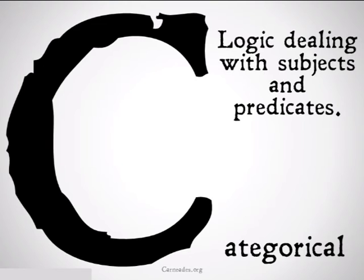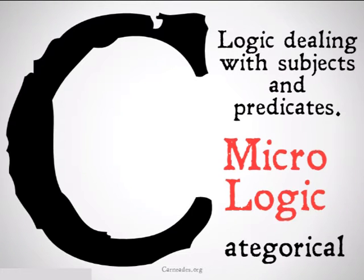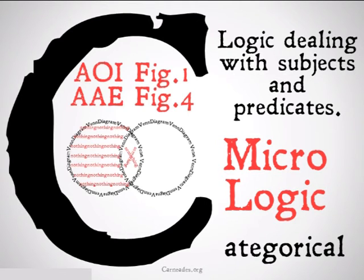Categorical logic, on the other hand, is logic dealing with subjects and predicates. It's kind of like micro logic. It's logic dealing with what's inside the statement and how that actually affects the logic as a whole. And it looks something like this.